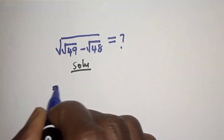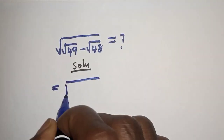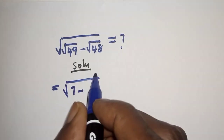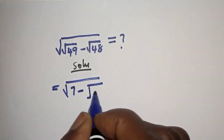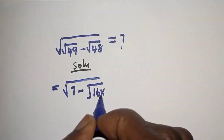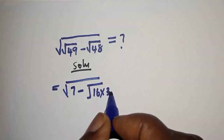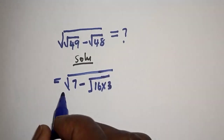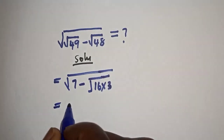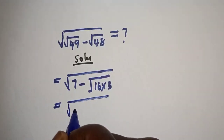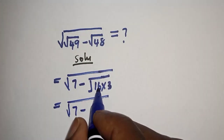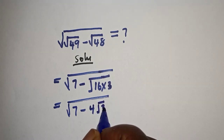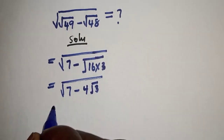This is equal to square root of: square root of 49 is 7, minus square root of 48, which is 16 multiplied by 3. This is equal to square root of 7 minus square root of 16 is 4, then root 3.